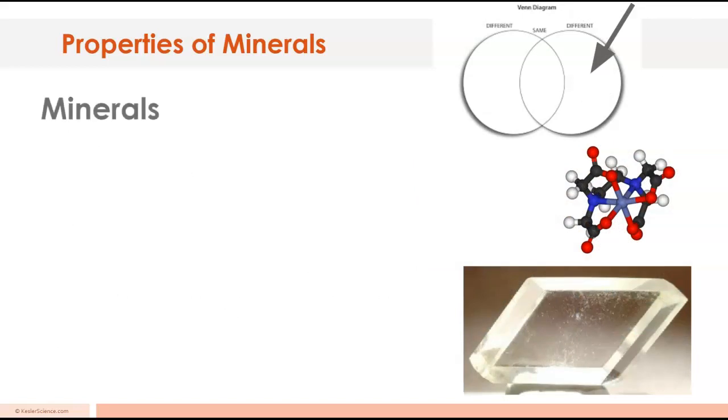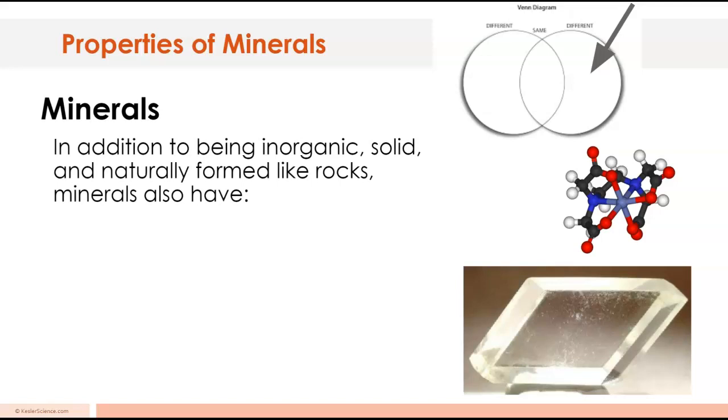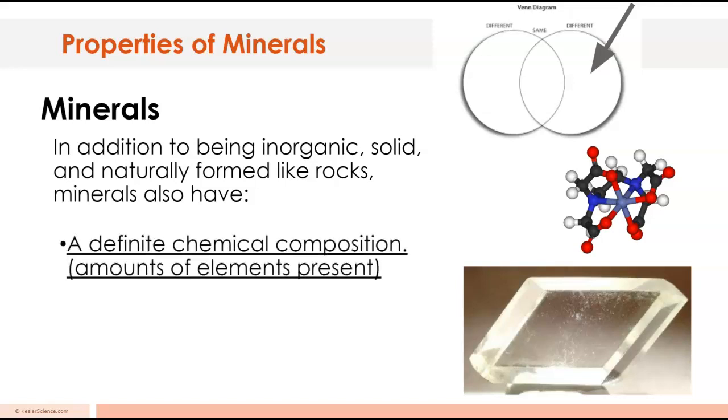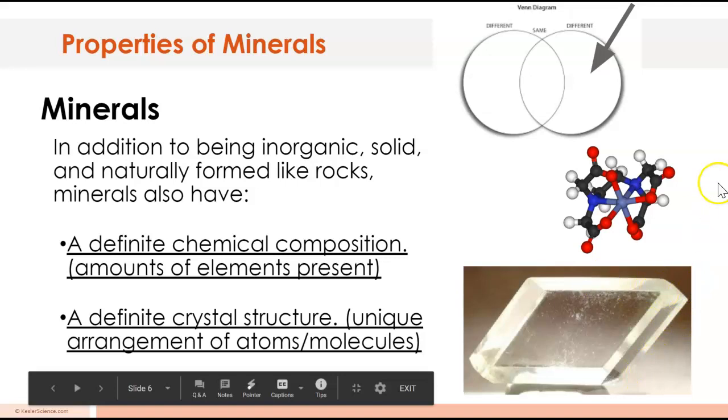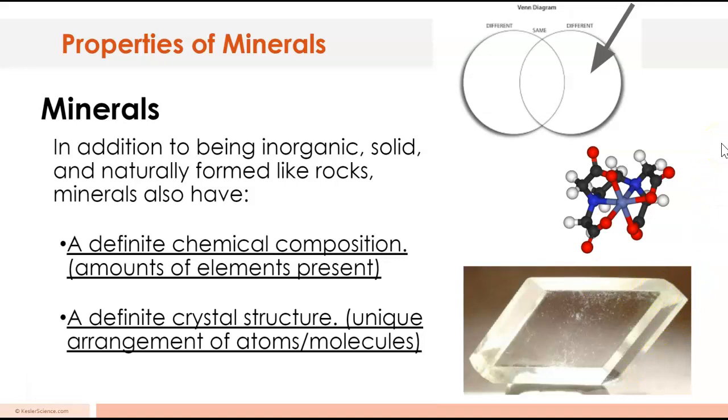Let's go on the right hand side. What makes minerals different from rocks? They're still inorganic, they've never been living. They're solid, they're naturally formed just like rocks. But how minerals are different is that they have a definite chemical composition. The amounts of elements present, for example salt, has one atom of sodium and one atom of chlorine. It's got a definite crystal structure. That means the atoms are arranged in a particular way like a crystalline structure and you tend to see these little corners forming on them. Go ahead and pause and copy those things down.